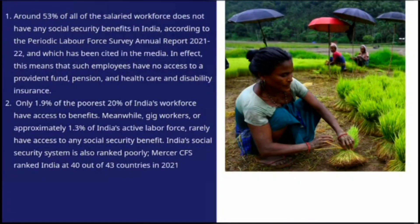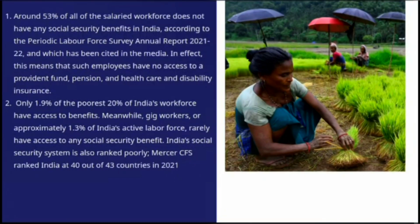Around 53% of all salaried workforce does not have any social security benefits in India, according to the Periodic Labour Force Survey Annual Report 2021-22. This means that such employees have no access to a provident fund, pension, and healthcare and disability insurance. Only 1.9% of the poorest 20% of India's workforce have access to benefits. Meanwhile, gig workers, or approximately 1.3% of India's active labor force, rarely have access to any social security benefit. India's social security system is also ranked poorly — Mercer CFS ranked India at 40 out of 43 countries in 2021.